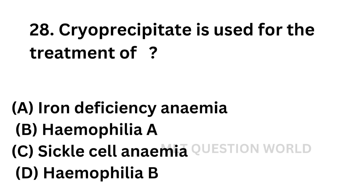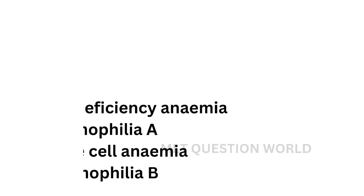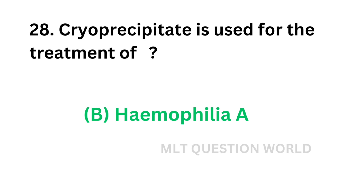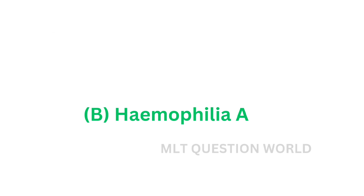Question No. 28. Cryoprecipitate is used for the treatment of: Option A: Iron deficiency anemia. Option B: Hemophilia A. Option C: Sickle cell anemia. Option D: Hemophilia B. Cryoprecipitate contains von Willebrand factor and factor VIII. It is used for hemophilia. The correct answer is Option B — Hemophilia A.